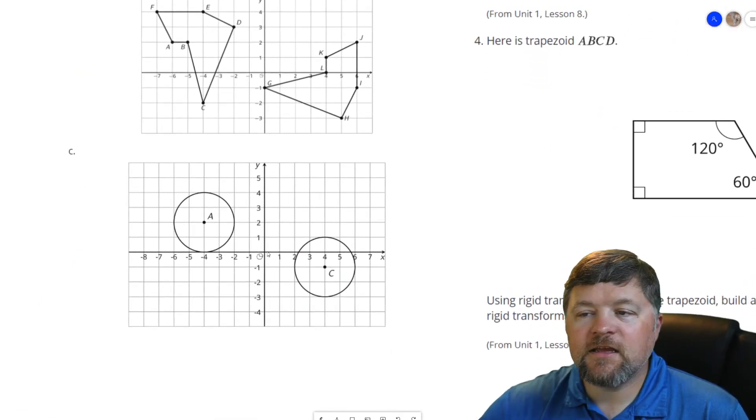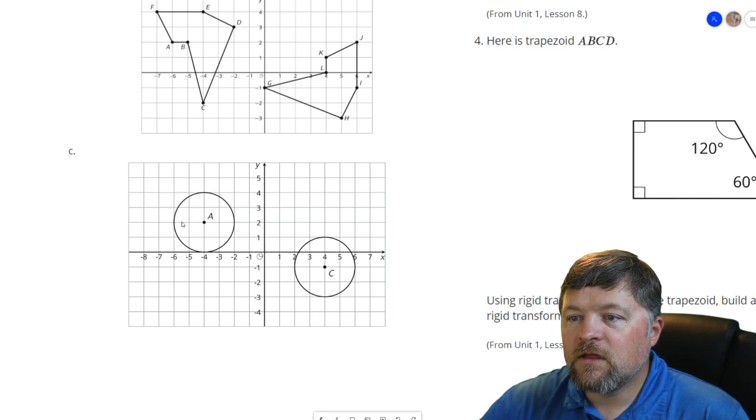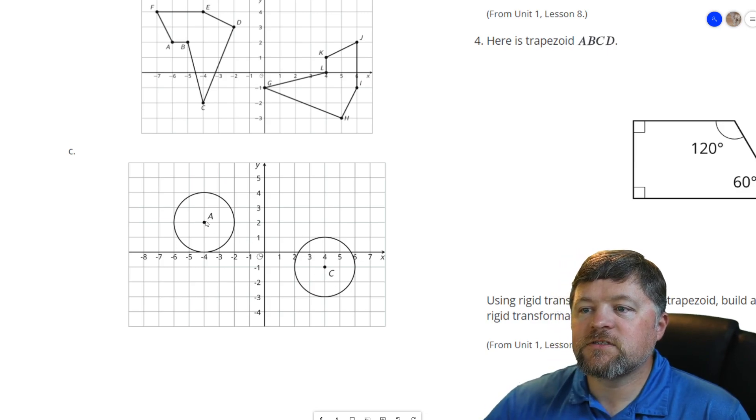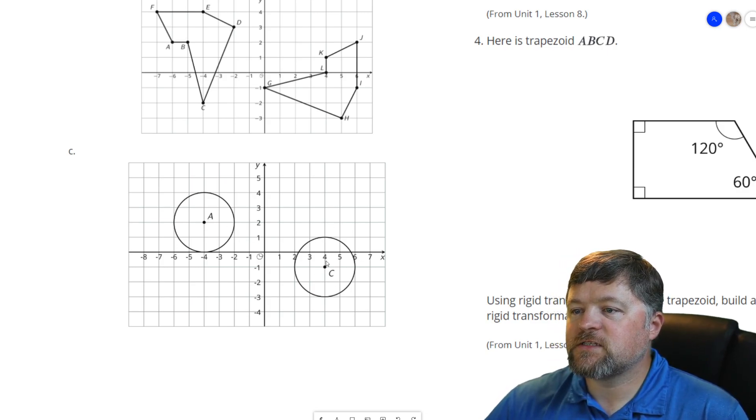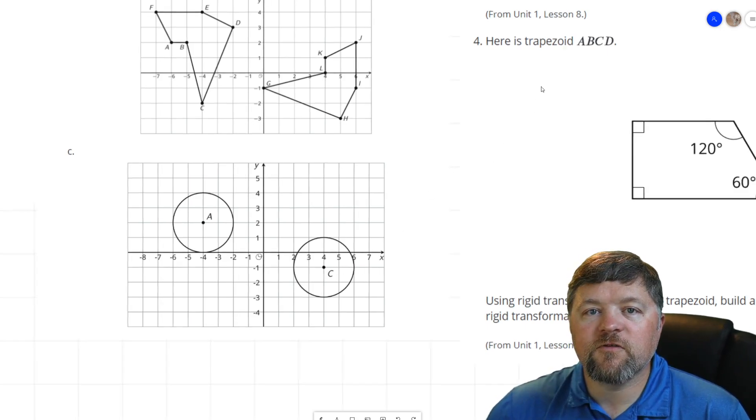Question C here, are these congruent? That's a circle with a radius of 2 units and that's a circle with a radius of 2 units. That is just a translation from one spot to the other will prove that those two circles are congruent to each other.